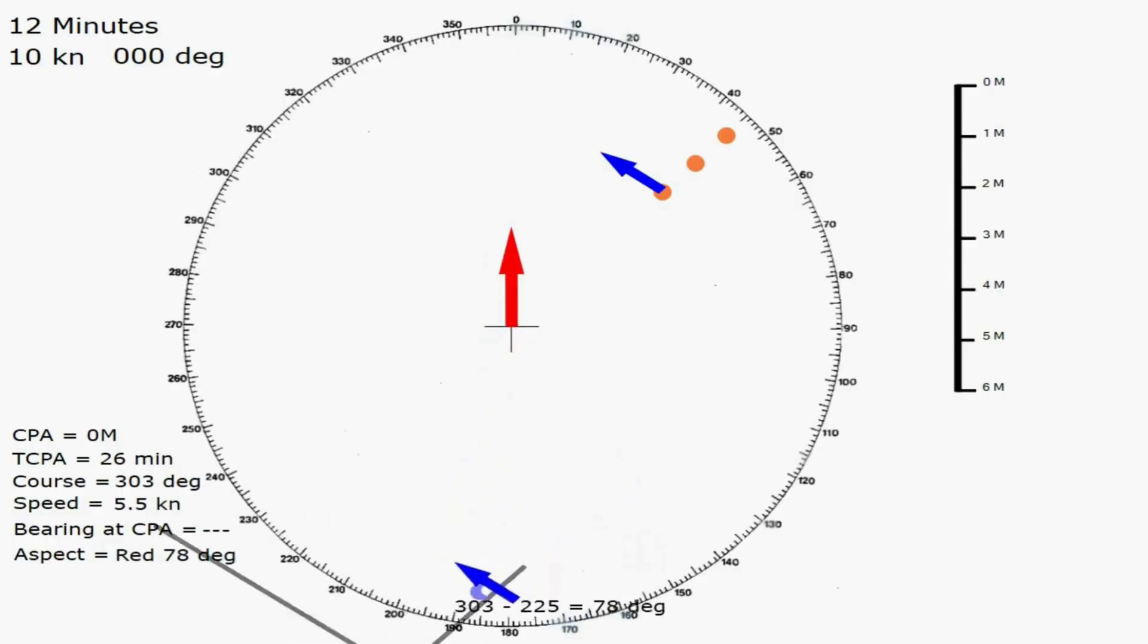Now, after all that, we've completed the plot. Completing the plot simply means finding the closest point of approach, time to the closest point of approach, target vessel's course and speed, their bearing when they're at the closest point of approach, and their aspect. In other diagrams, it would be more difficult to find these, and we might have a CPA that's not quite zero. Now, to confirm all this, let's just swap it out from a radar plot and look at the overview of the vessel situation.